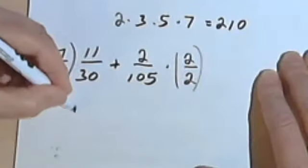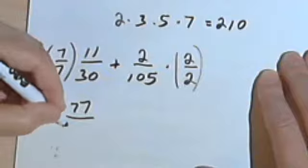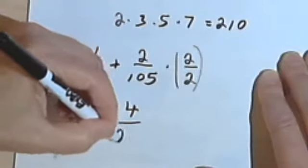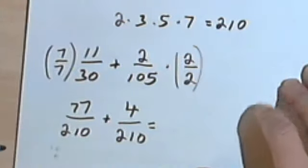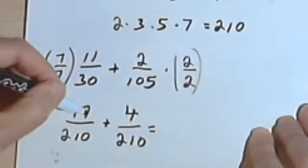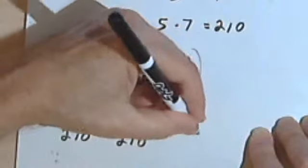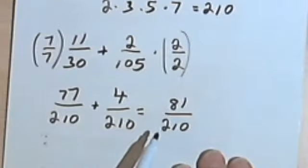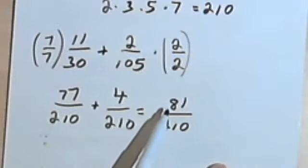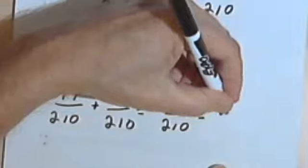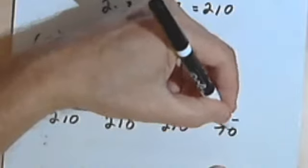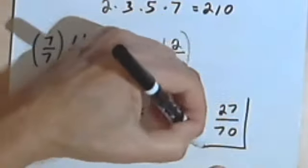Let's do that. 7 times 11 is 77. 7 times 30 is 210. 2 times 2 is 4. 2 times 105 is 210. Now my denominators are the same, so I can add these together. 77 plus 4 is 81. I've got 81 over 210. Remember, you always want to check and see if you can reduce this, which I can. I can divide both of these numbers by 3. 3 into 81 is 27. And 3 into 210 is going to be 70. I can't reduce it anymore, so this is going to be my answer.